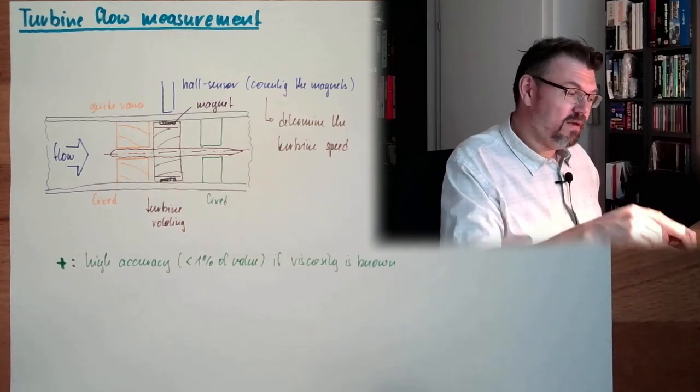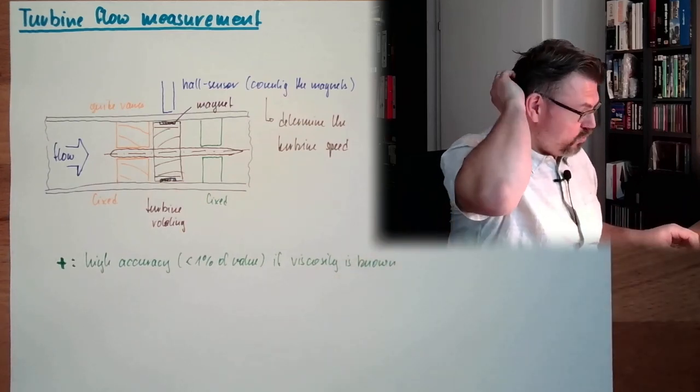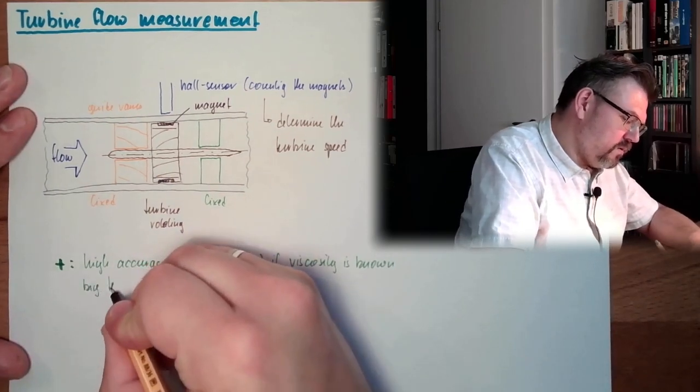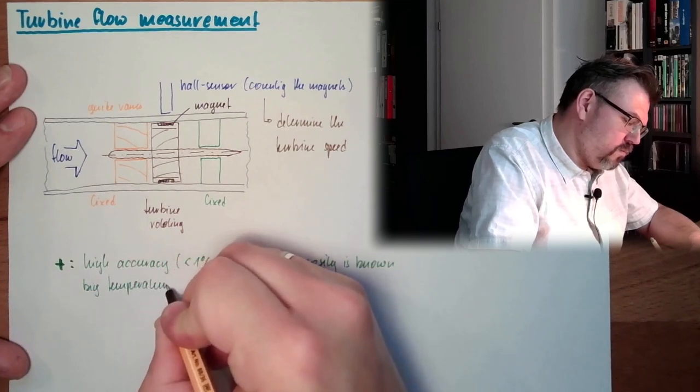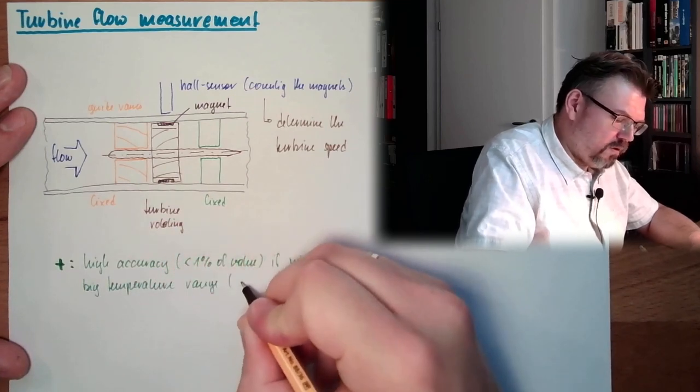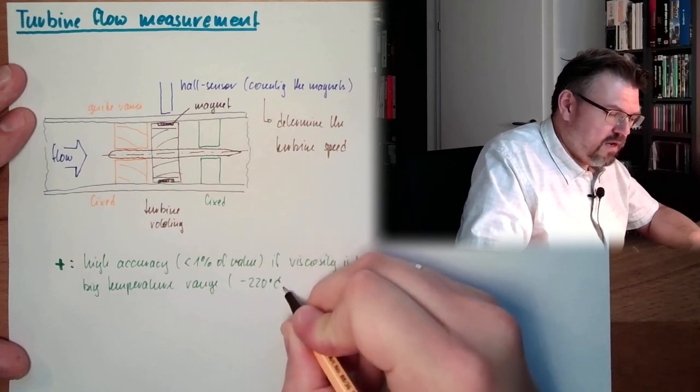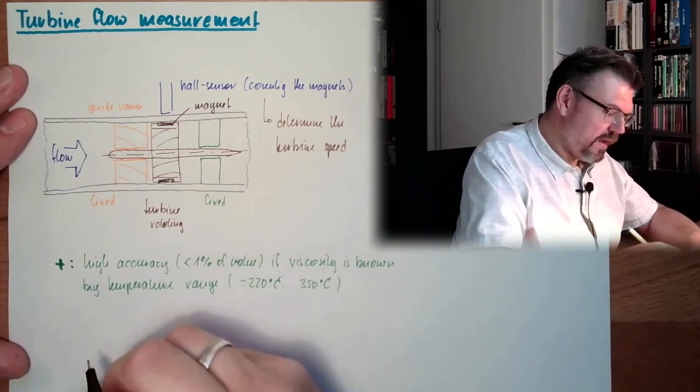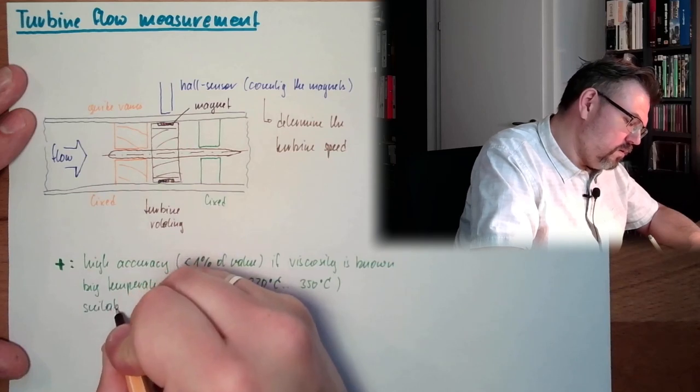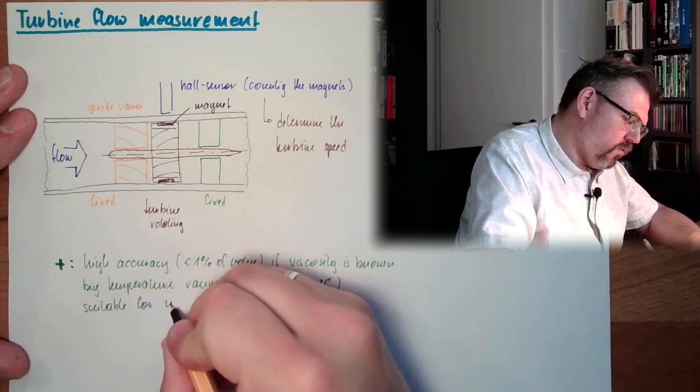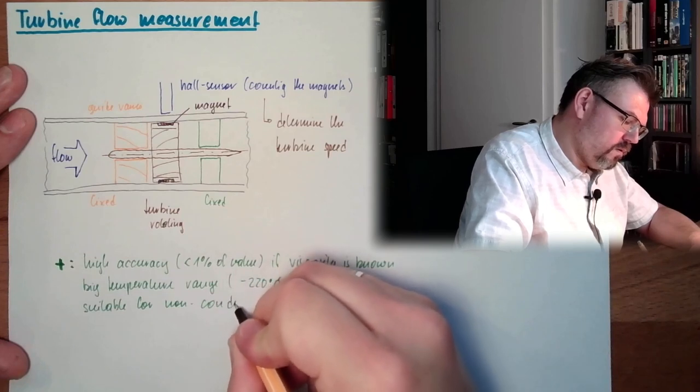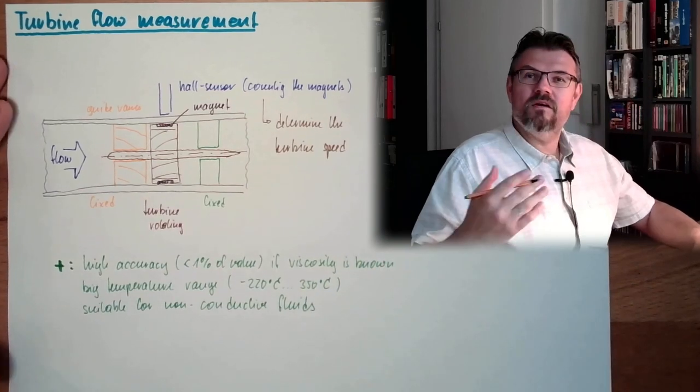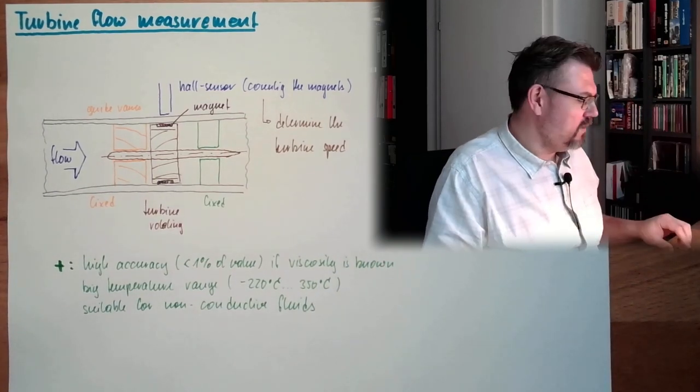That's the point. We'll discuss this at the not so good parts. So we have a big temperature range. We're talking about minus 220 degrees Celsius up to 350 degrees Celsius. So pretty good. And it's suitable for non-conductive fluids, in contrast to magneto inductive measurement.